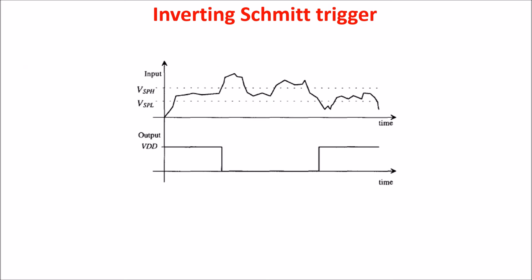Here we show a possible input to a Schmitt Trigger and the resulting output. When the output is high and the input exceeds VSPH, the output switches low. However, the input voltage must go below VSPL before the output can switch high again. So note that we have a clean output signal even if the input is noisy.